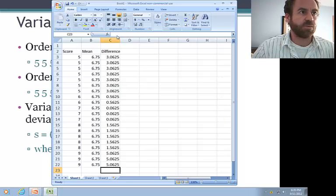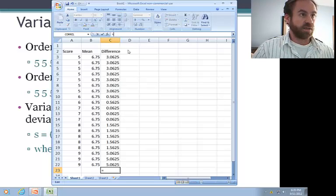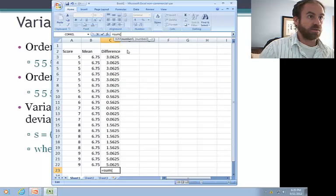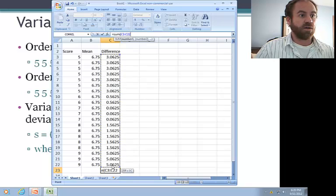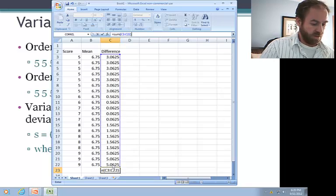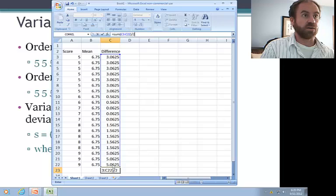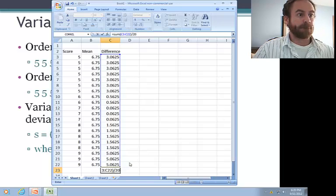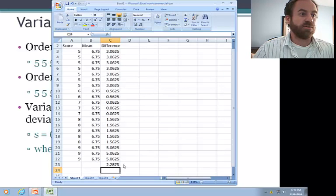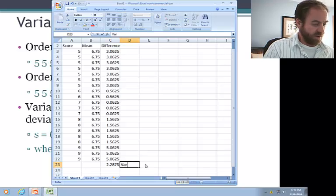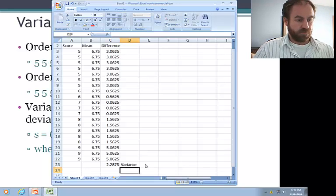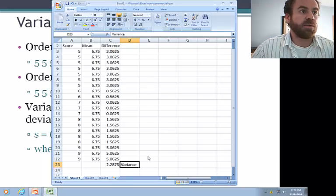And now we get the difference for each of the scores. To find the variance, then, what we have to do is we have to take the sum of all of those divided by the number of scores, which in our case was 20. And we get a variance of 2.285. That is, our population variance in this case is 2.285.